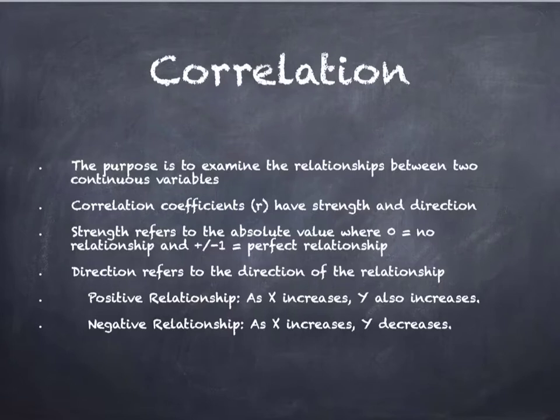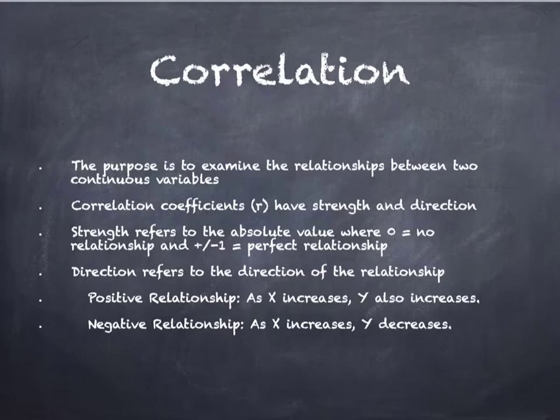An important thing to note here is that sometimes something that might seem like a positive relationship might be negative simply because of the way the variable is scored. For instance, if I were to look at the relationship between hours of training and sprint performance, I might think of that as a positive relationship. However, if we score sprint performance as time, a better sprint performance is a shorter amount of time. So as you spend more hours training, your sprint times will decrease — that would indicate a negative relationship. Students should just keep in mind how the scoring of their variables occurs to understand whether a positive or negative relationship is occurring.